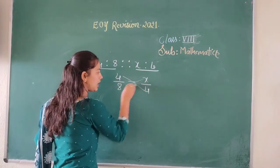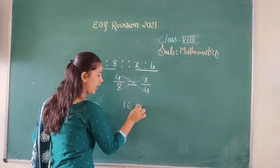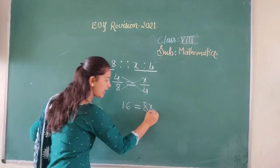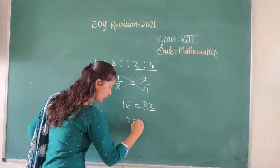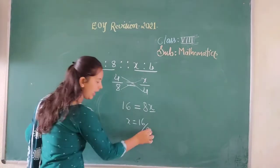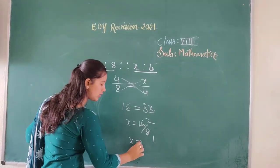Now, do cross multiplication here. 4 into 4 is what? 16, right? 8 into x is 8x. We want x, right? So, x equals to 16 divided by 8. 8 twos are 16. So, x equals to 2.